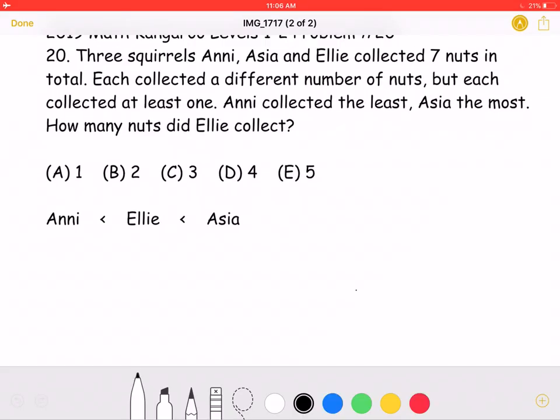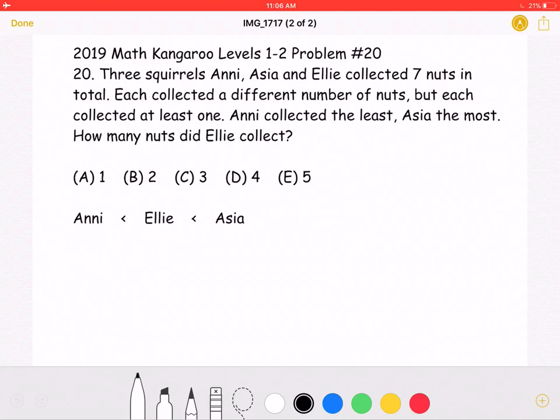And here is where we will be doing the solution. To start, the problem states that Annie collected the least and Asia the most. So that means Annie must be over here, Asia over here, and Ellie must be over here in the middle. The problem also states that they all collected seven nuts in total, and each collected a different number of nuts, but each collected at least one.